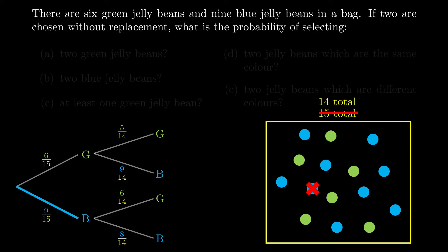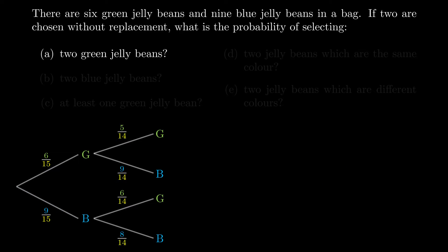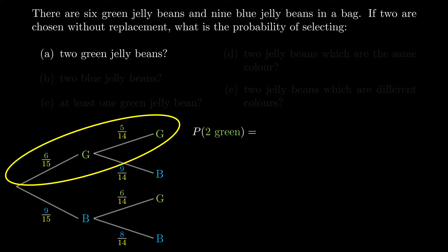The first question asks for the probability of getting two greens. Two greens means we have to get a green first and a green second, so only that one outcome from the tree diagram is valid. This happens in two steps: my first jelly bean is green with probability 6/15, and then my second jelly bean is green with probability 5/14. We multiply those two together and get 1/7.